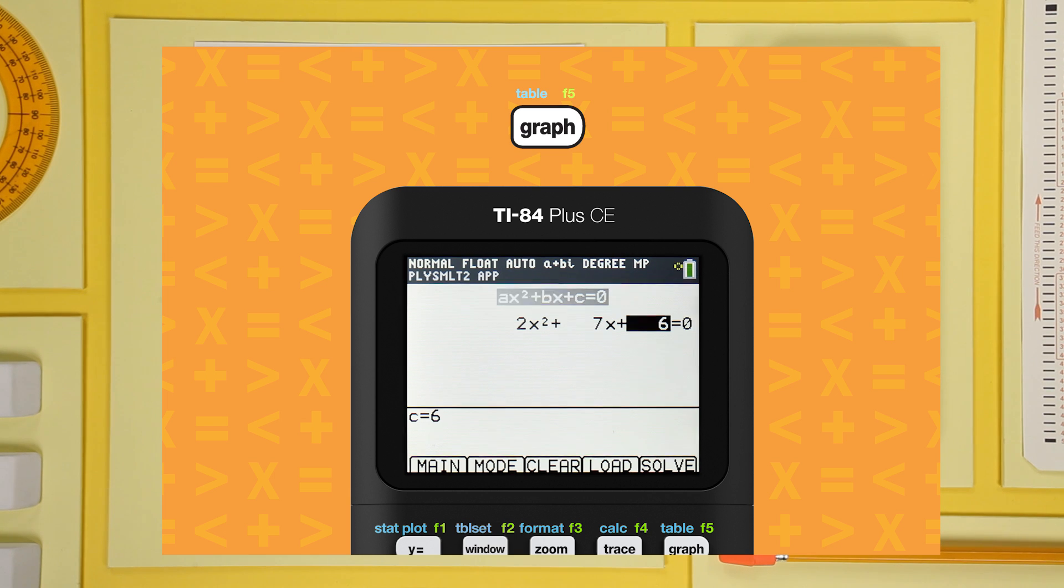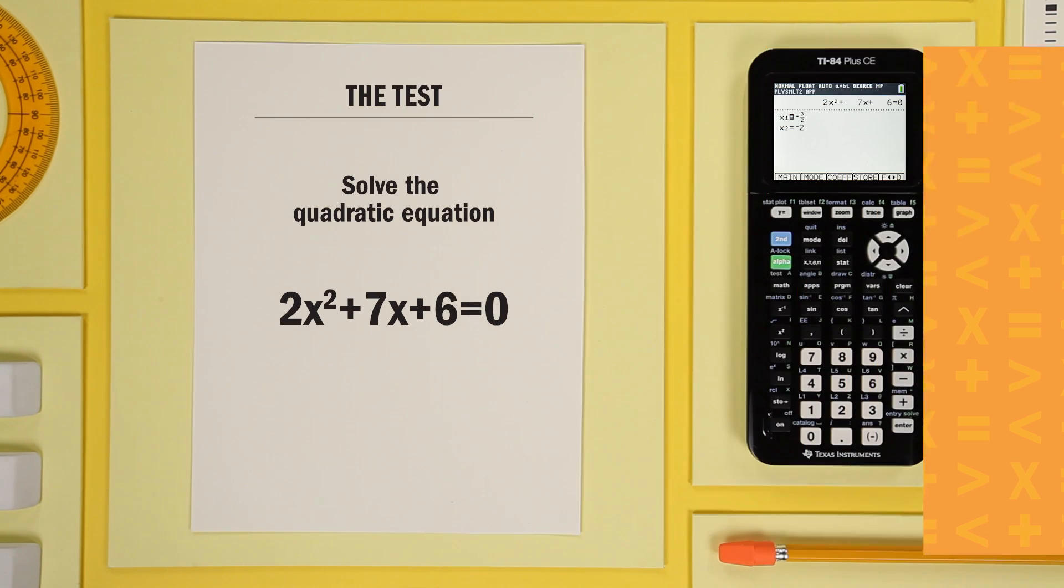Press graph again to get your solution. Negative 3 halves and negative 2. Great!